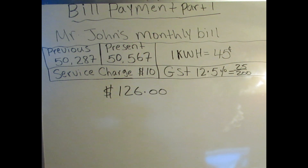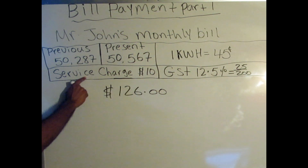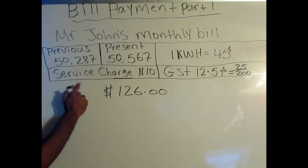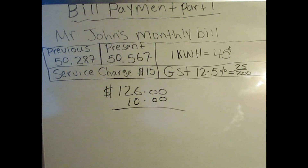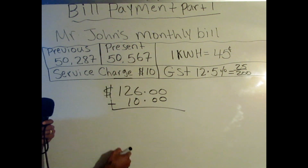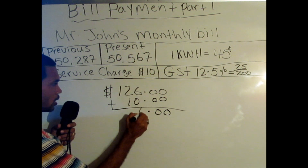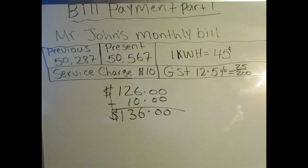Two more steps and the bill will be solved. One thing to note: whenever you're solving a bill, there are times when it will say do not include service charge — but in this case, it didn't say that, so we have to add the service charge. We add that $10 to the $126. Six plus zero is six, two plus one is three, bring down the one, add the decimal. After adding the service charge, Mr. John pays $136 so far.